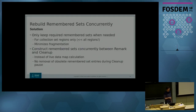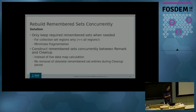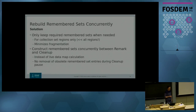Some key observations: G1 maintains the remembered set all the time for all regions, but it actually only needs the remembered set during the mixed GC season — all other times it doesn't need it. Also, removing obsolete remembered set entries is costly: you need to create the live data map, and during the cleanup pause you need to scrub the remembered set, which can take a few hundred milliseconds. So the solution is to only keep the required remembered sets when really needed — that means only for regions in the so-called collection set.